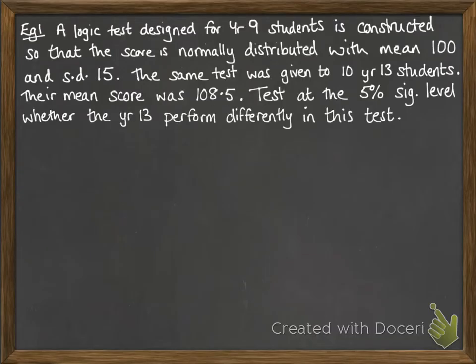So how does this look in a question? Let's have a look at one. A logic test designed for year 9 students is constructed so that the score is normally distributed with mean 100 and standard deviation 15. The same test was given to 10 year 13 students, and their mean score was 108.5.